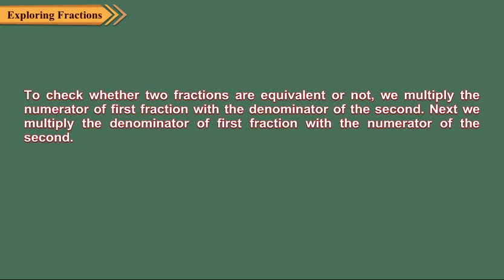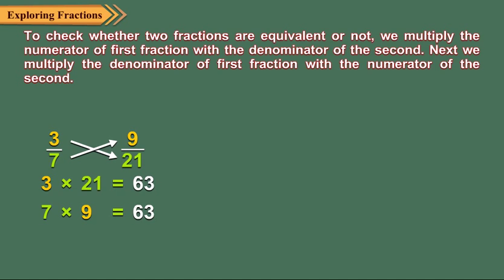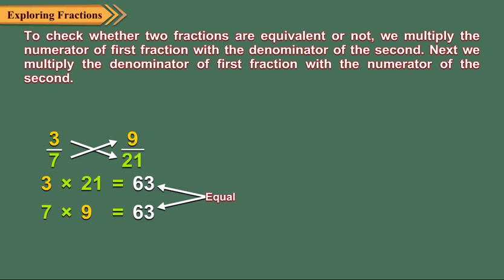Consider the fractions three upon seven and nine upon twenty-one. The product of three and twenty-one is sixty-three. The product of seven and nine is also sixty-three. So, three upon seven and nine upon twenty-one are equivalent.